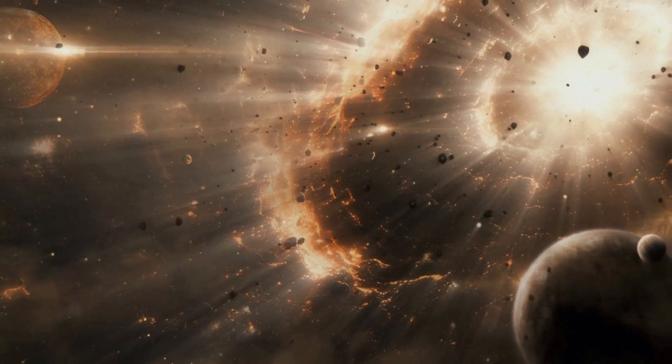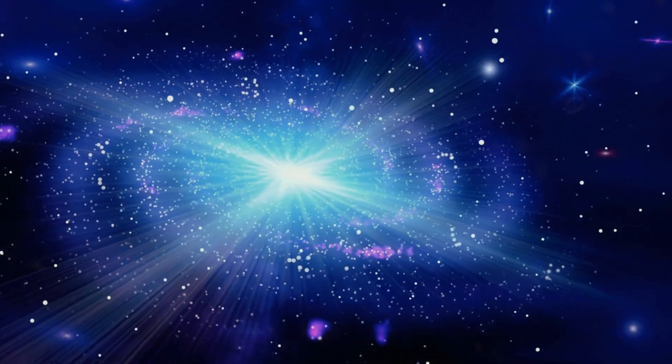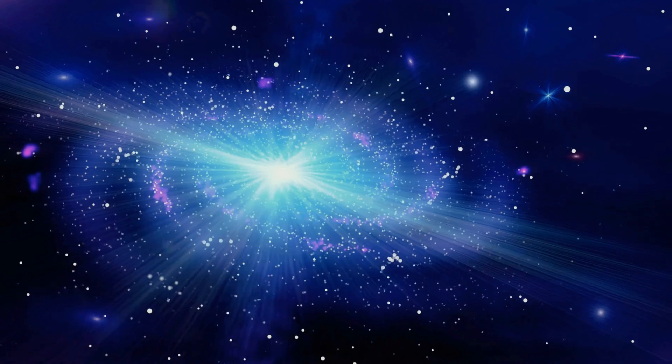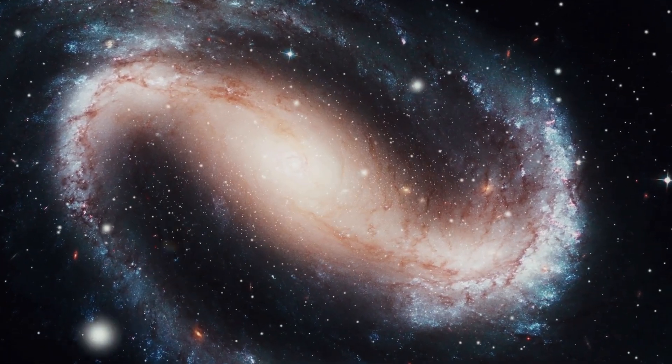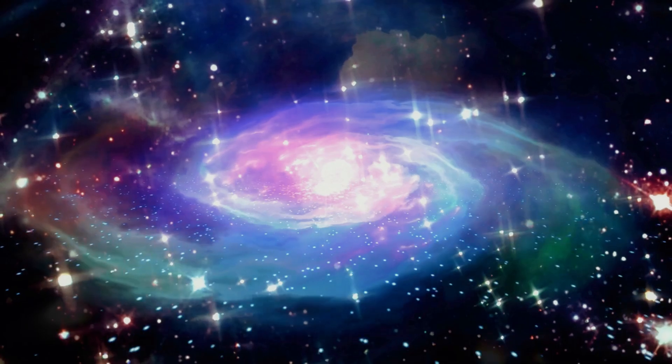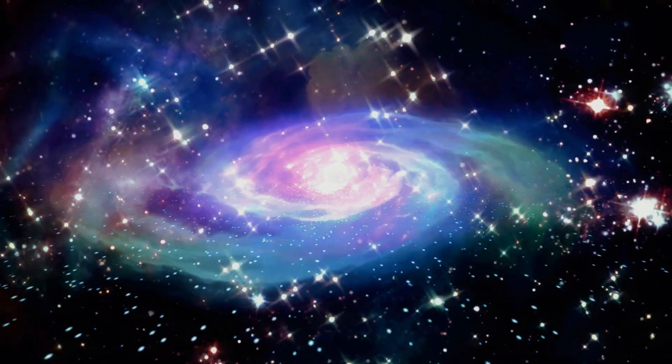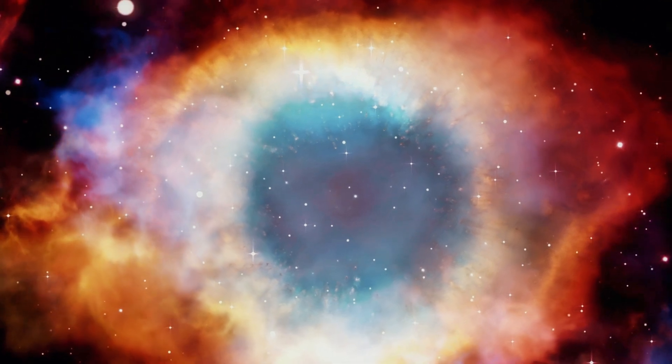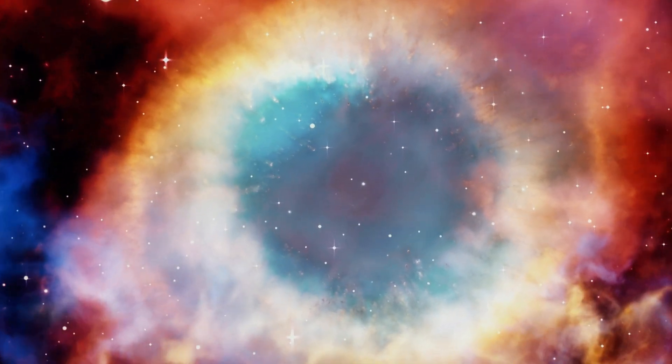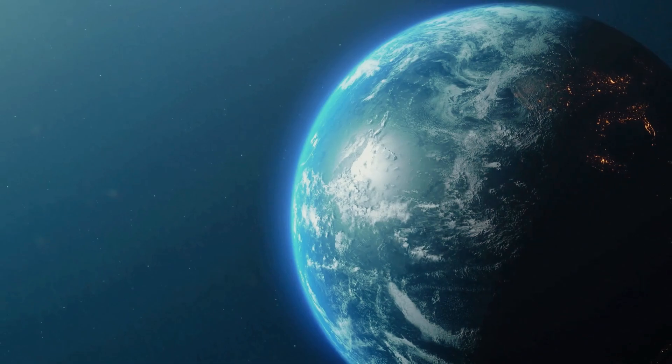Once two galaxies have collided and the dust begins to settle, the aftermath is both destructive and creative. After the initial chaos of a galaxy crash, the merging galaxies start to form a new, singular structure—usually an elliptical galaxy. This process doesn't happen overnight. It can take hundreds of millions, even billions of years for the galaxies to fully merge. During this time, gravitational forces settle, stars find new orbits, and gas clouds collide, often igniting a burst of new star formation. In this cosmic rebuilding process, black holes at the centers of both galaxies may also merge, growing larger and exerting more influence over the surrounding space. But what does all this mean for the future of the new galaxy, and more specifically for planets like Earth?